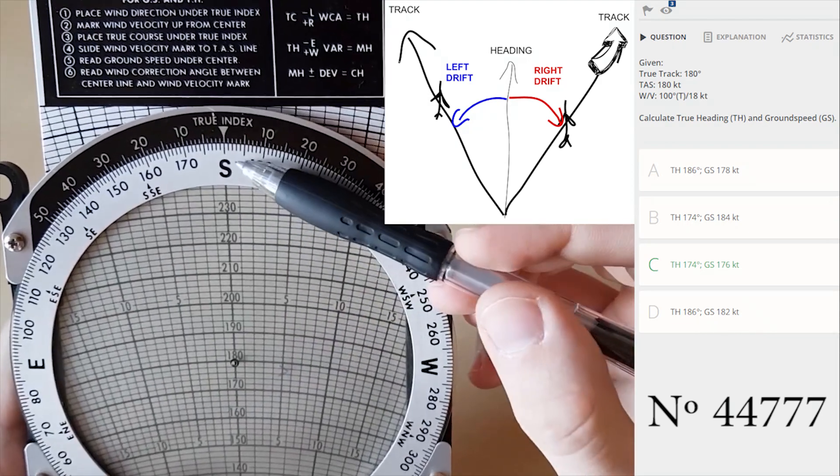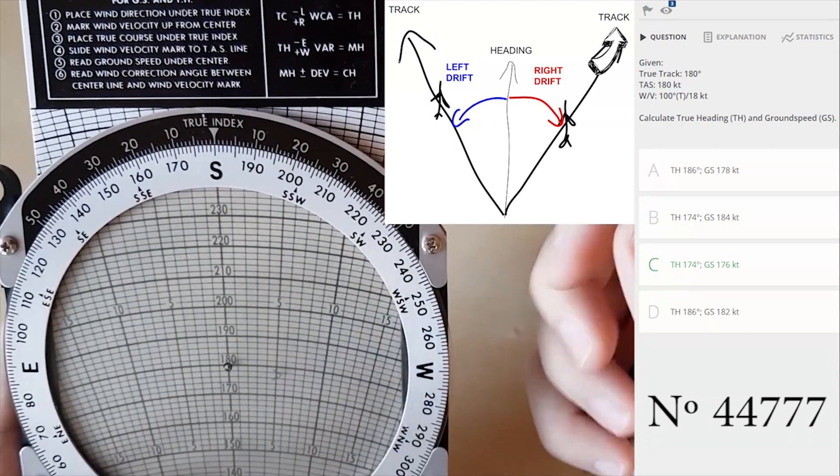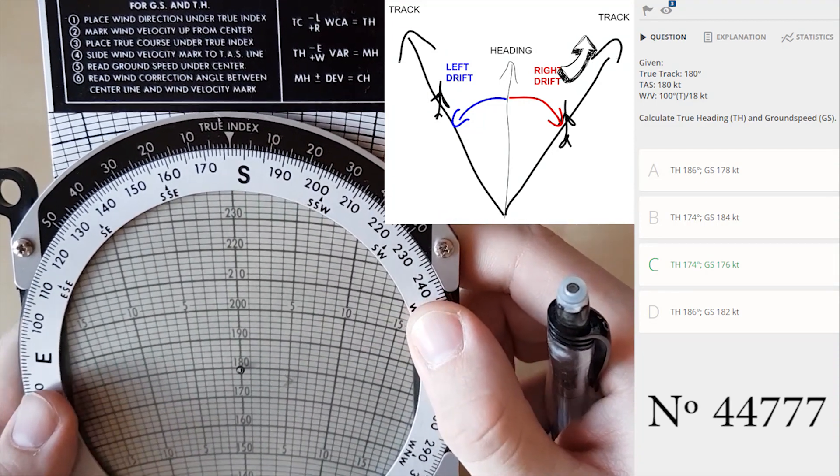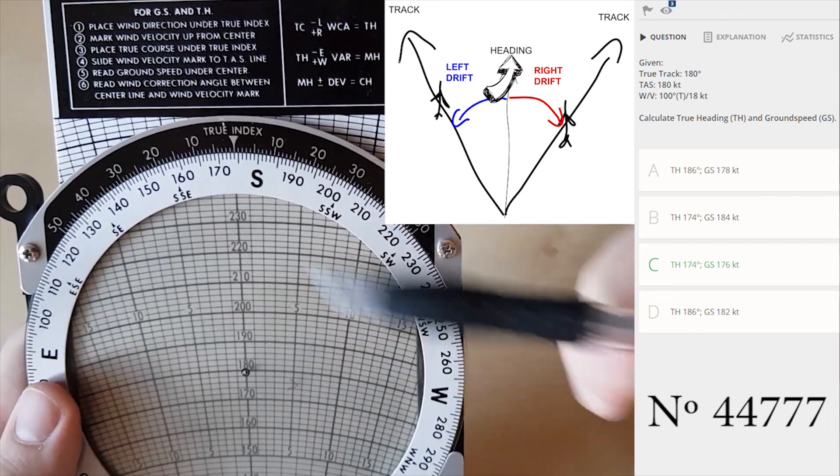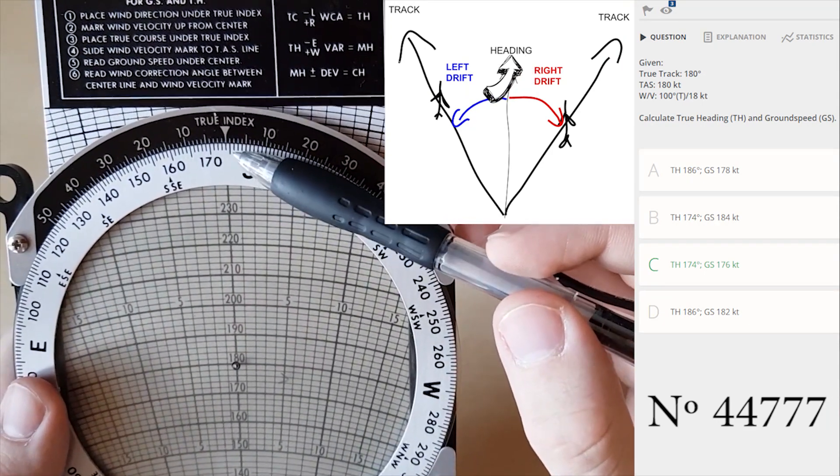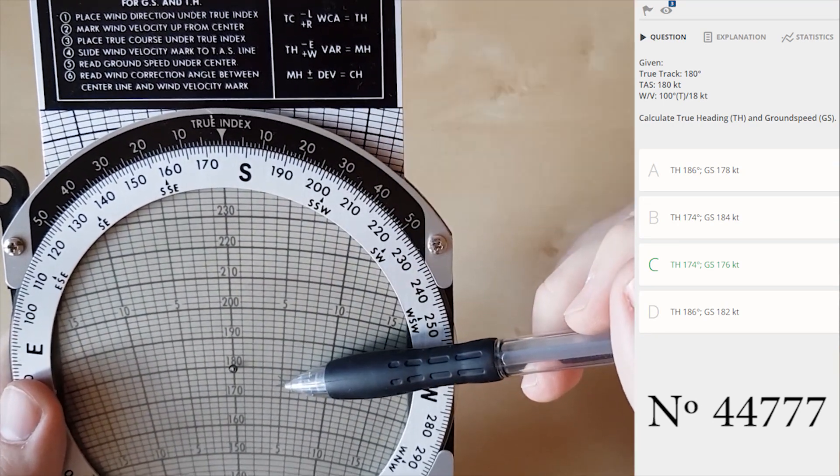So if this is my track and this is my drift, I need to move this circle to the left six degrees. This gives me 174 degrees and since this is my heading now I can read my ground speed from here, which is approximately 176 knots of ground speed.